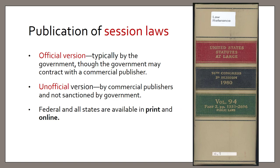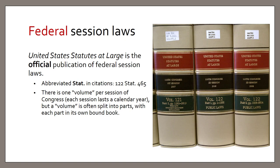Session laws often come in two versions: an official version, typically published by the government or through a contract with a commercial publisher, and then unofficial versions put out by commercial publishers. These are not sanctioned by the government but are generally considered highly accurate, both in print and online. The official version of the federal session laws is called the United States Statutes at Large, abbreviated STAT in citations. The first number of a Statutes at Large citation indicates the volume number, and the second number indicates the page number where the text of that statute begins. So 122 STAT 465 means volume 122 of the Statutes at Large on page 465.